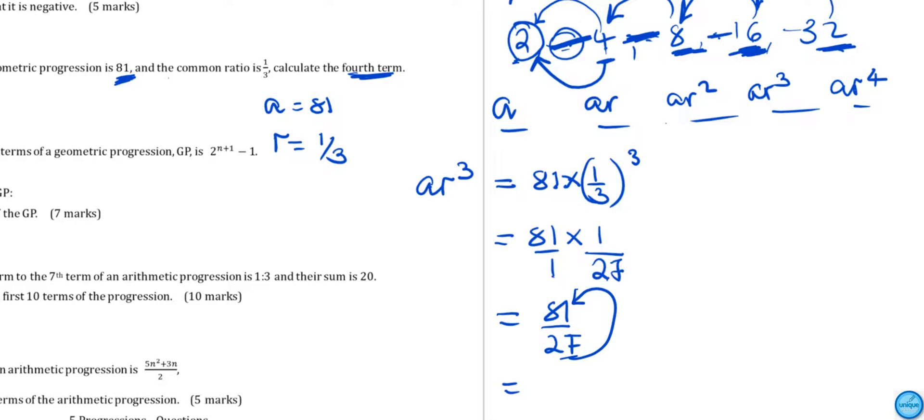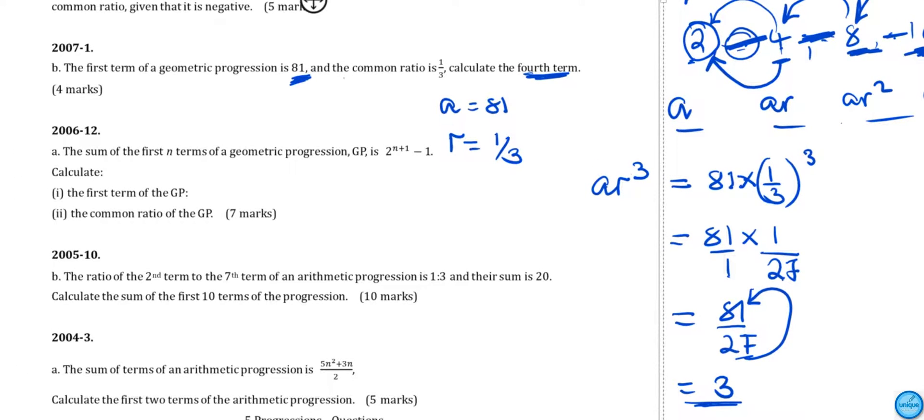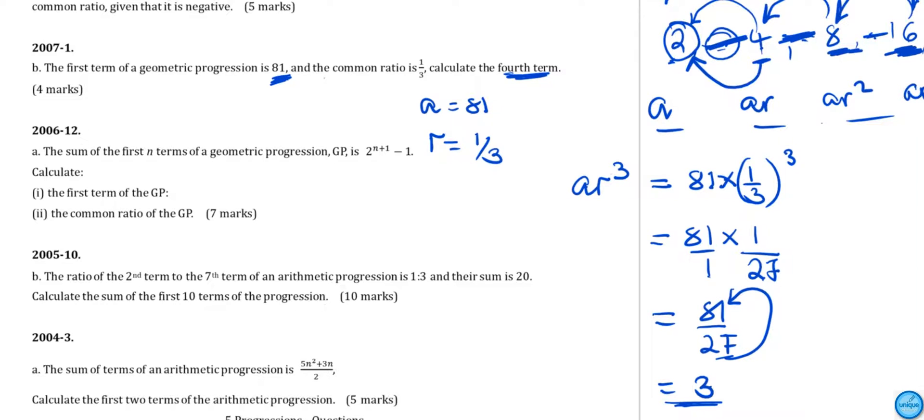Let's do this one. The seventh term of an arithmetic progression is 1/3 and their sum is 20. We should find the sum of the first ten terms. This is an arithmetic progression.